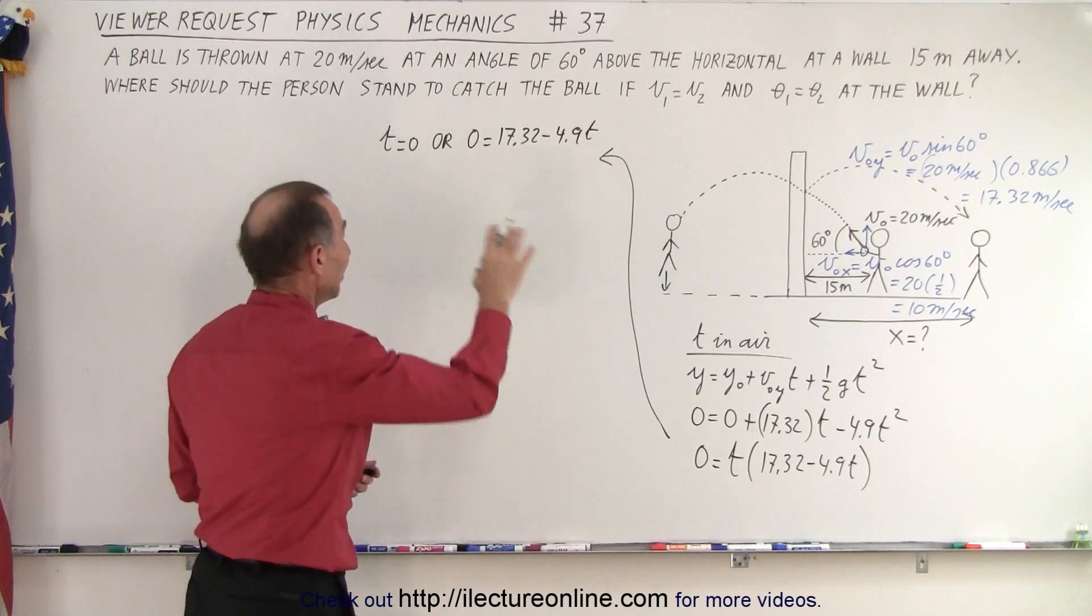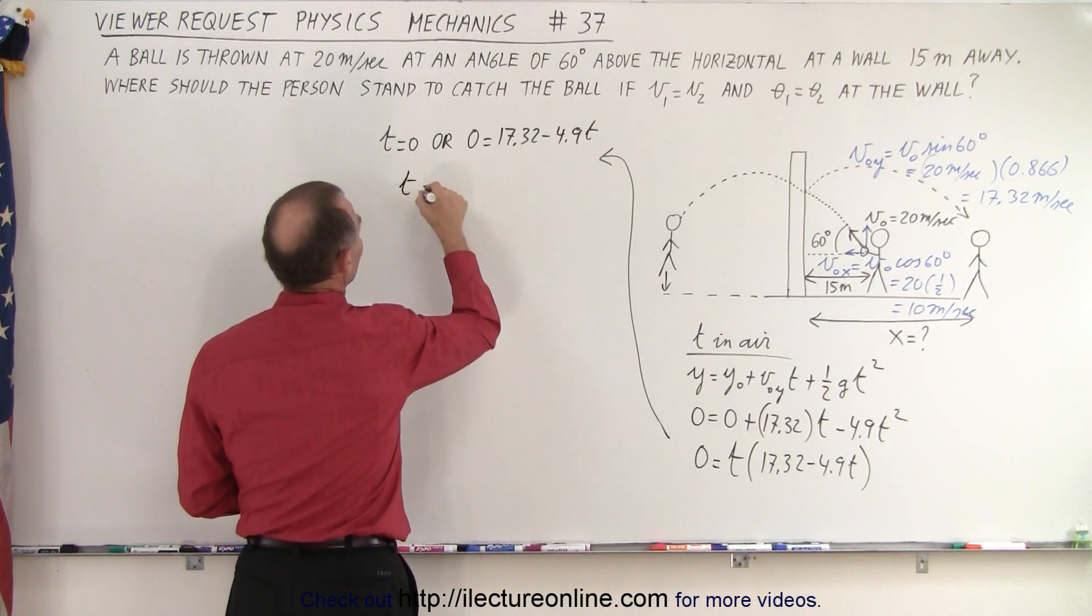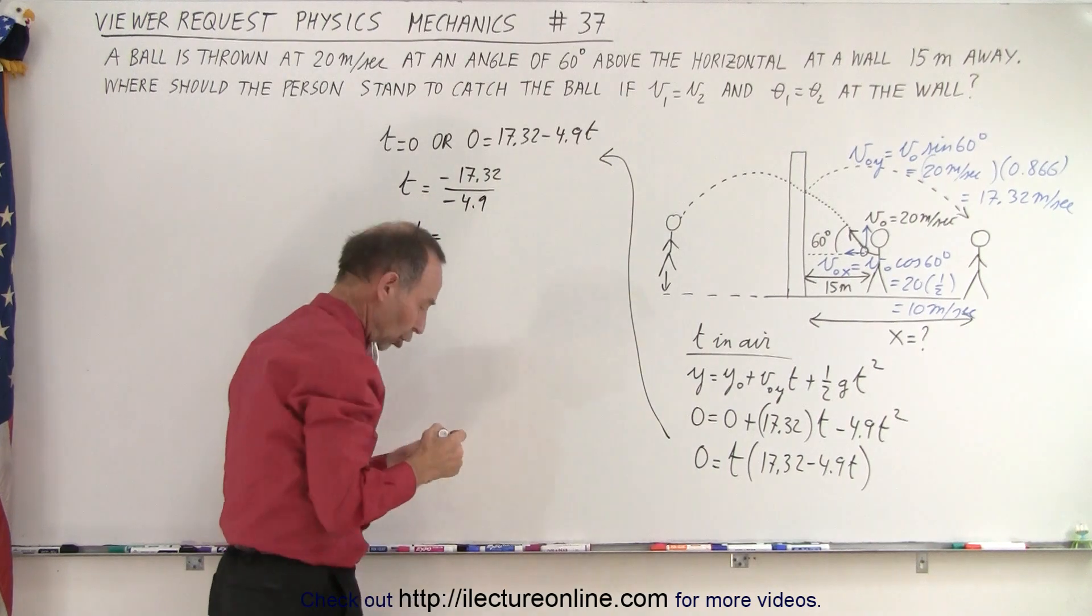And the other possibility, t is equal to 17.32. When we bring that over, it becomes divided by the 4.9. So t is equal to 17.32 divided by 4.9. That gives us 3.535 seconds.